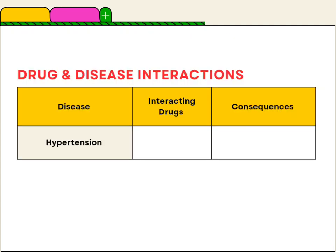The next disease is hypertension. In case of hypertension, we need to avoid NSAIDs, otherwise it may worsen the hypertension.